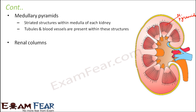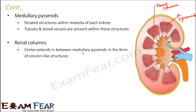Next are the renal columns. In between the medullary pyramids there are column-like cylindrical structures known as renal columns. The cortex extends in between the medullary pyramids in the form of column-like structures. These are also known as the columns of Bertini — essentially extensions of the cortex between the medullary pyramids.